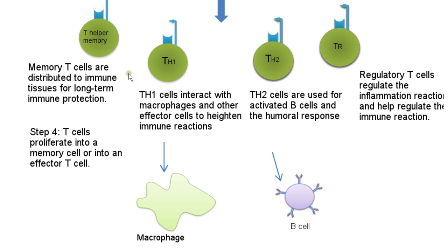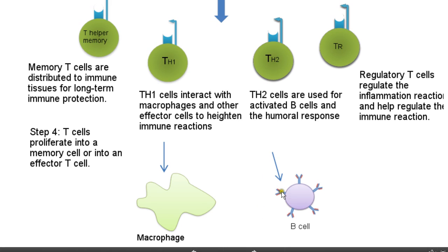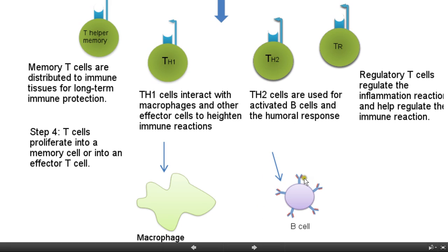The effector T cells are of two types: T helper 1 and T helper 2. T helper 2 cells are used to activate B cells in the humoral response, which will be covered in another video. T helper 1 cells increase the activity of other cells such as macrophages and help to activate T cytotoxic cells.